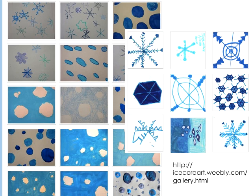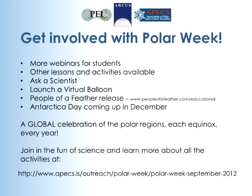Here are some pictures of what's been submitted already — a couple of classrooms are starting to submit. The one on the right is from a group of third graders, and the one on the left is from middle school and high school students. It's a pretty neat gallery. We're hoping to take some images and create composites of the global ice core by the end of Polar Week, so we'll need lots of submissions. We want to see what you can bring to the table.